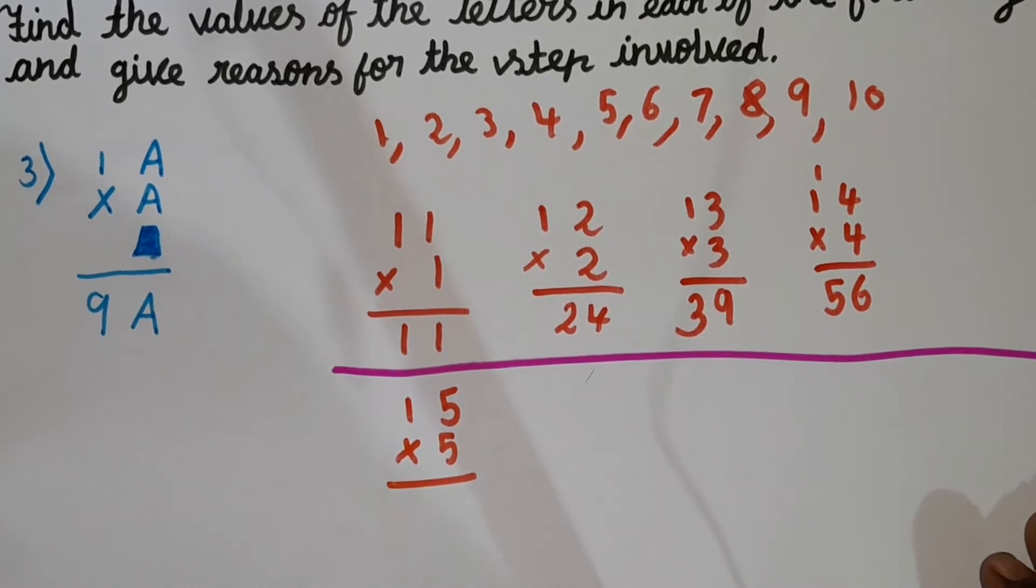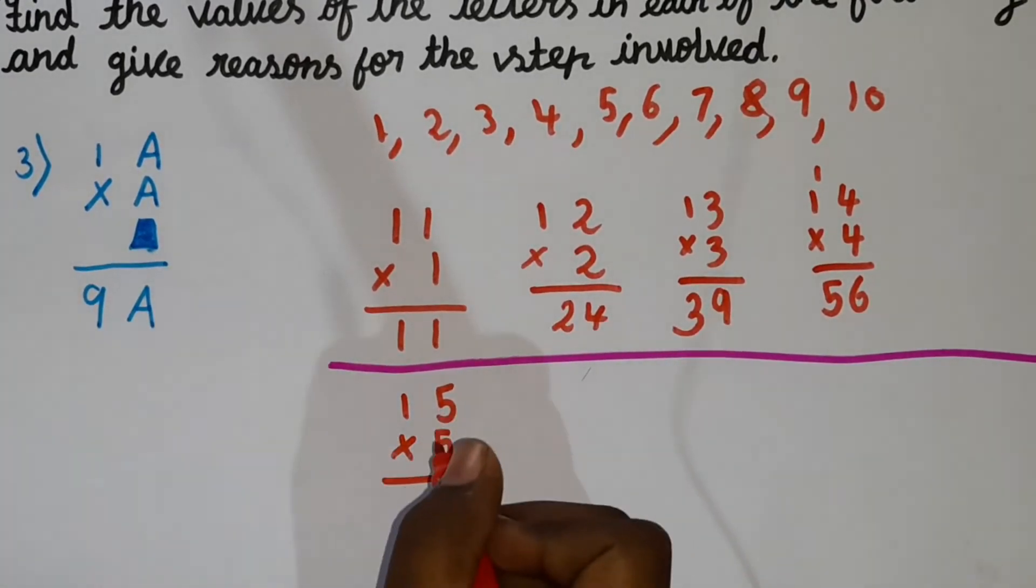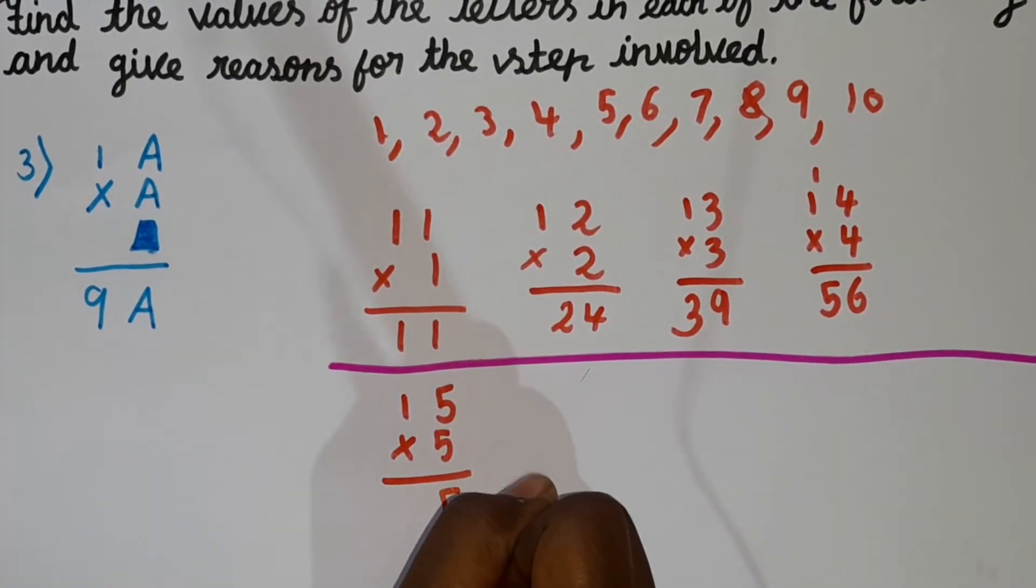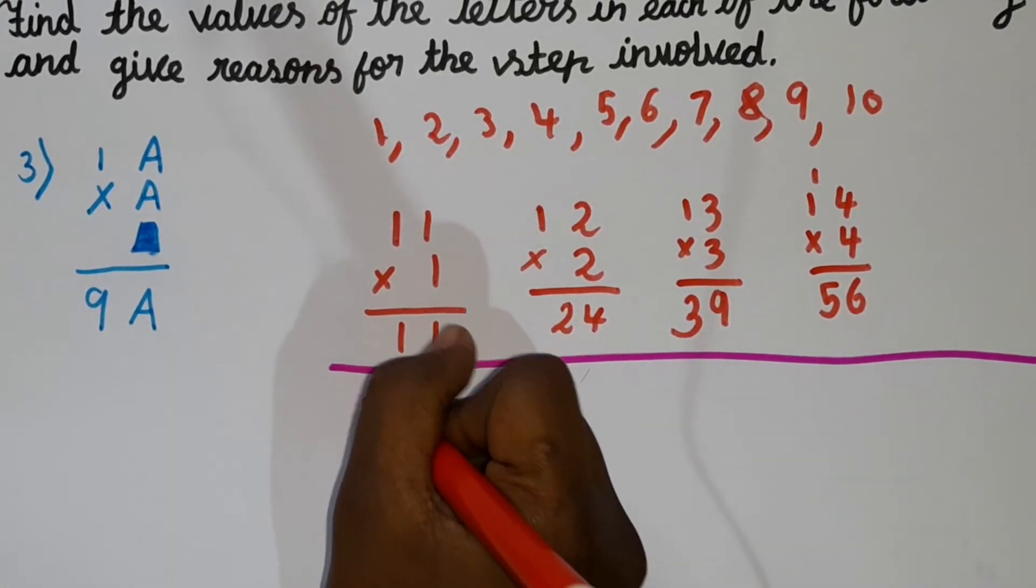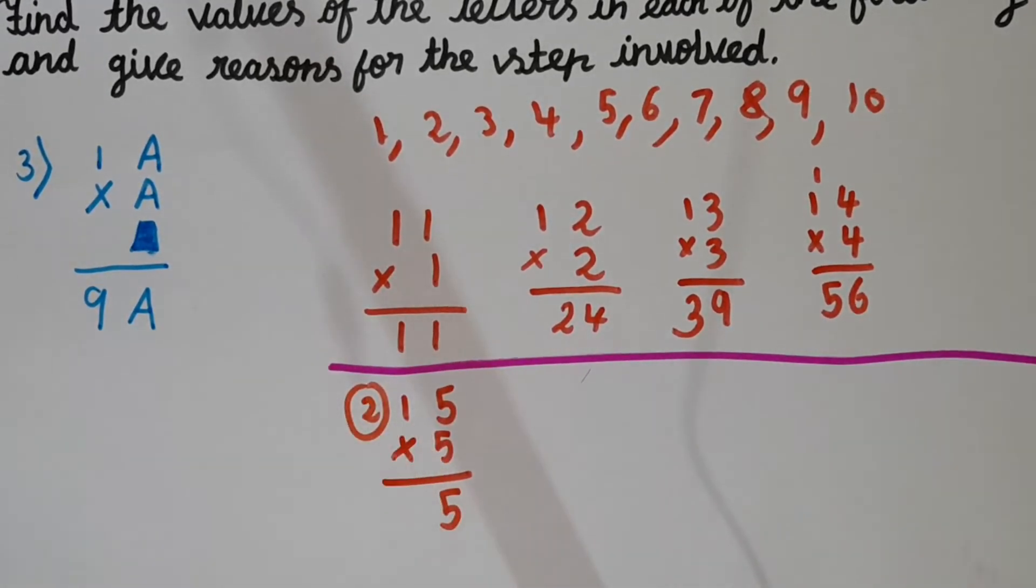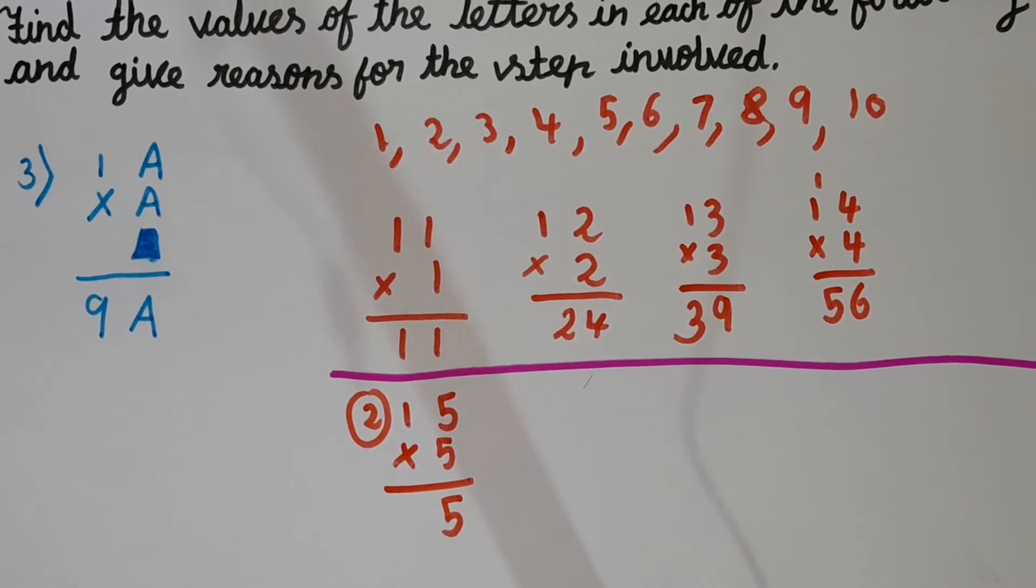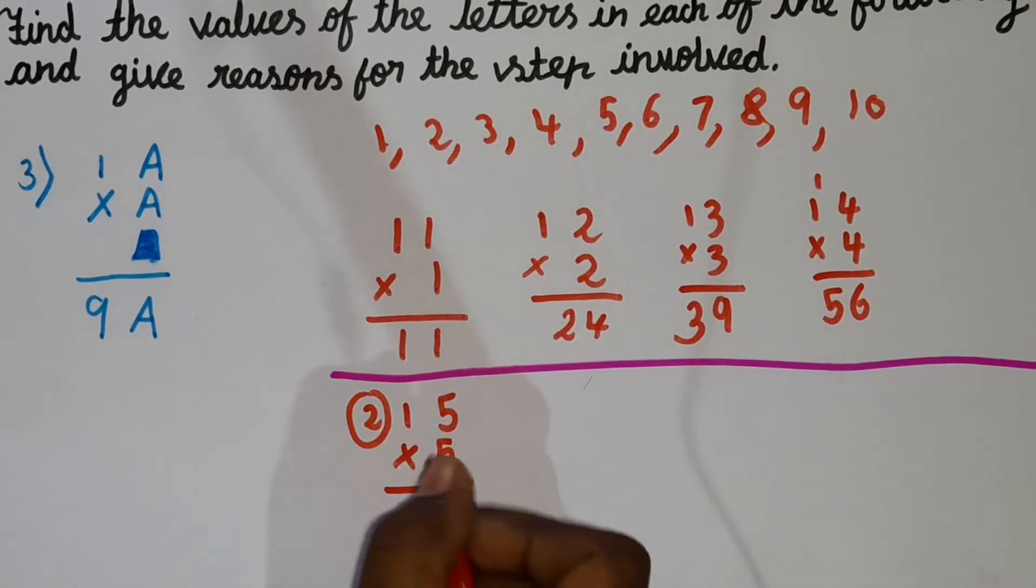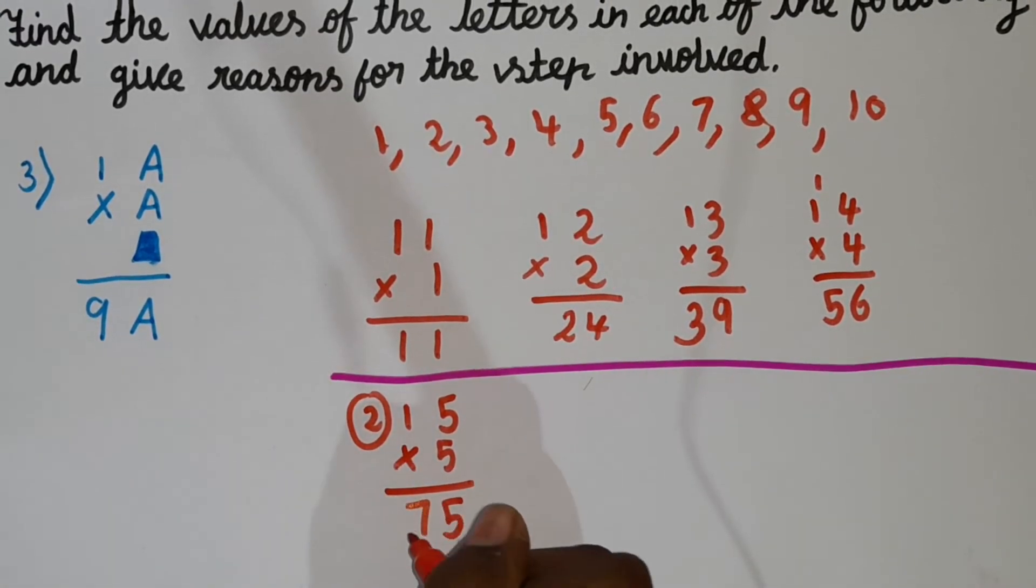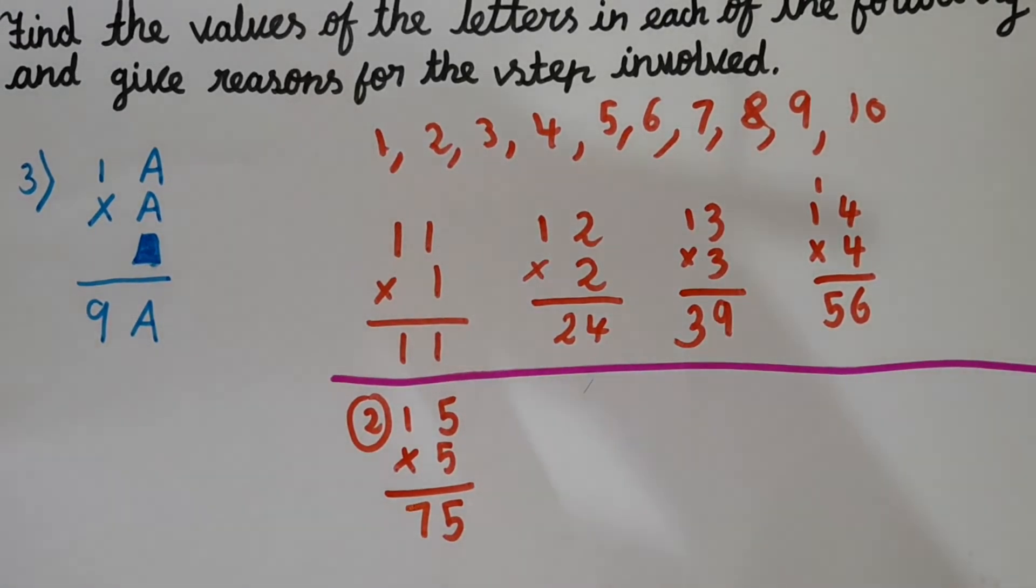5 fives are 25, 5 here, 2 carry. 5 ones are 5, plus 2 is 7. So here we should have got 9, but we didn't get 9. So this is also not possible.